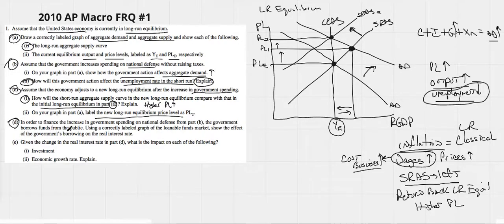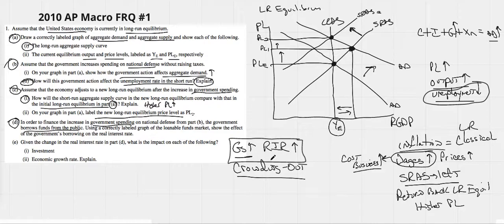Alright. D, in order to finance the increase in government spending on national defense, the government borrows from the public. Now, anytime we're talking about government spending going up and borrowing from the public, this is also what we call crowding out. What I've noticed is that the college board doesn't tend to use the phrase crowding out on any of their FRQs, none that I could find, but crowding out is what happens. Anytime government spending is going on, we just need to know that the real interest rate has to go up. If you learn this and put this in your brain, it's going to save you a lot of time.